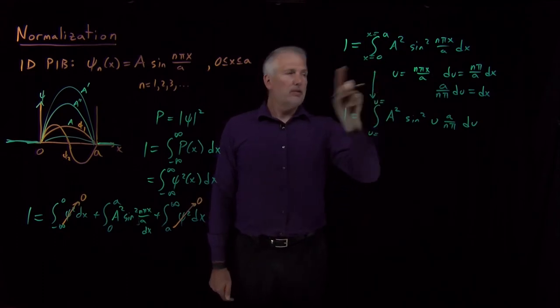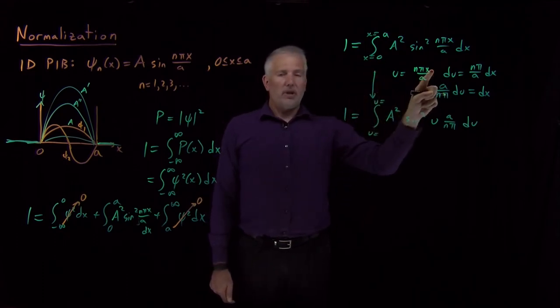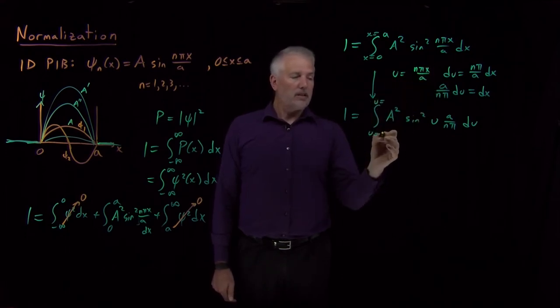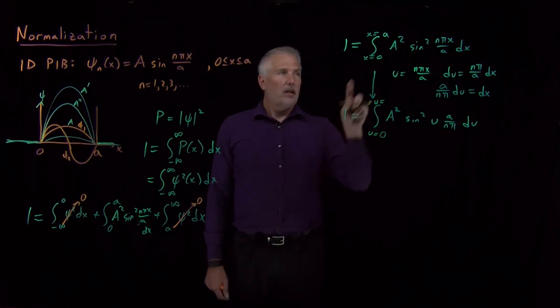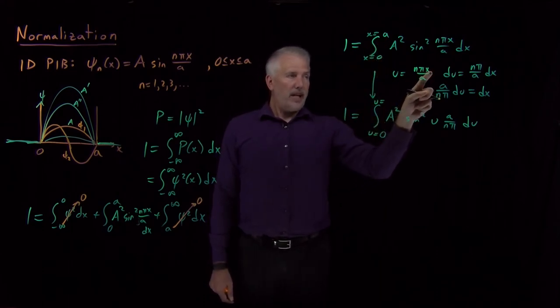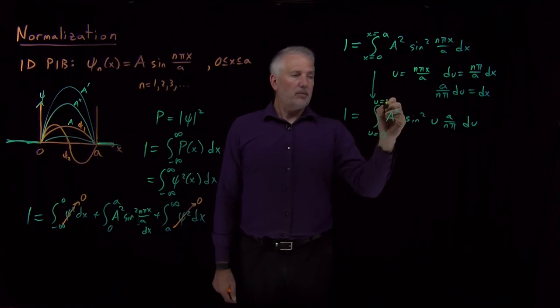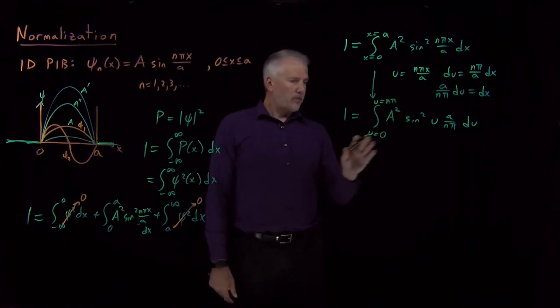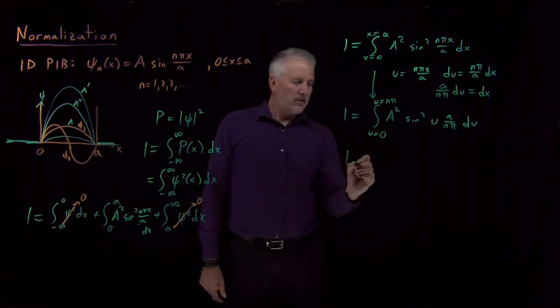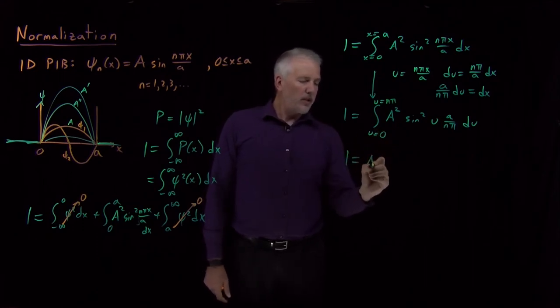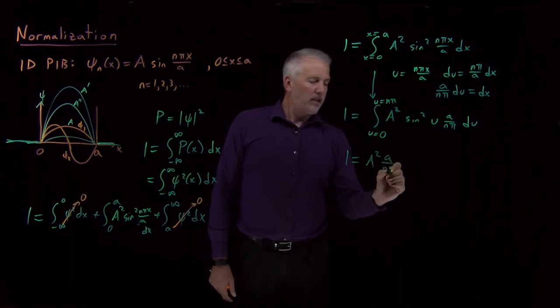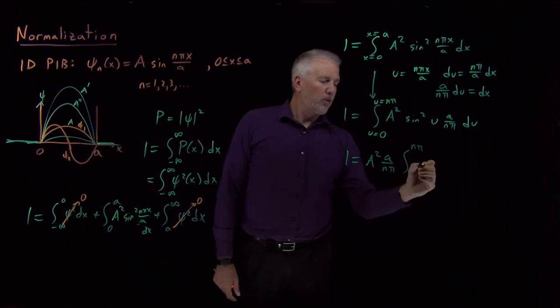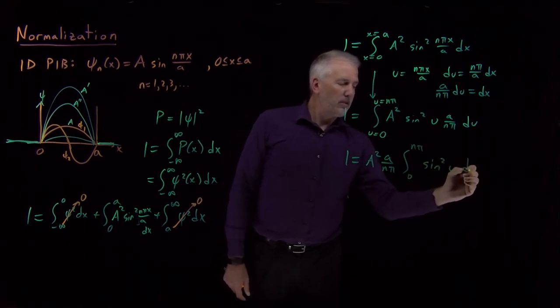When x equals zero, if I plug into this expression, if I plug a zero in here, the value of u is nπ times zero over a, so that's still zero. When x equals a, nπ times a over a, the a's cancel, and I'm on the upper side, upper limit, just integrating up to nπ. So let's pull all the constants out of this integral. So I've got A squared, a over nπ, and now I'm integrating from zero to nπ the quantity sine squared u du.